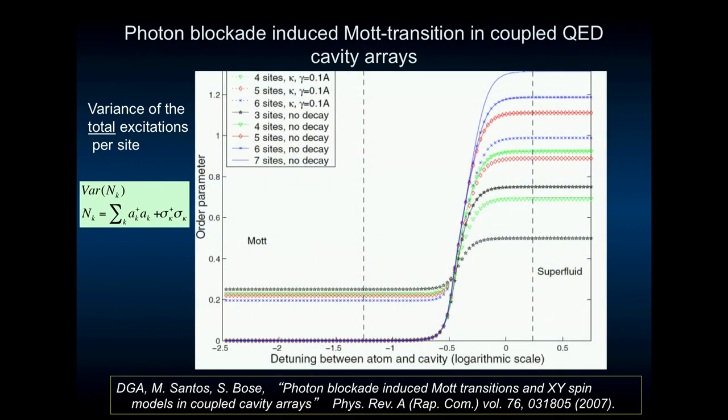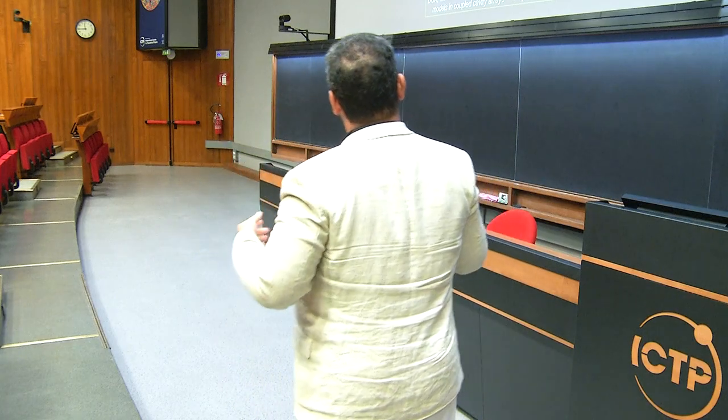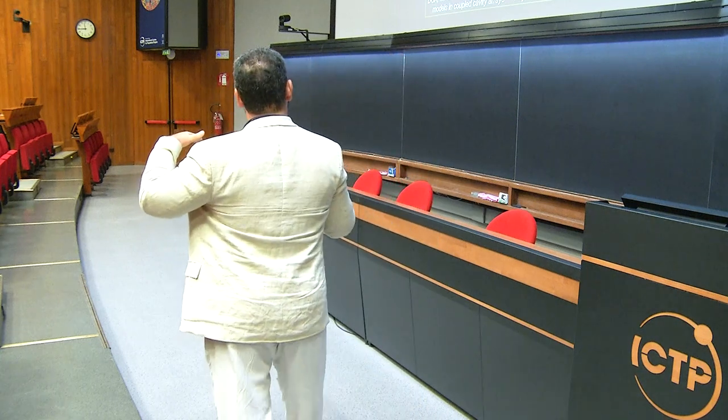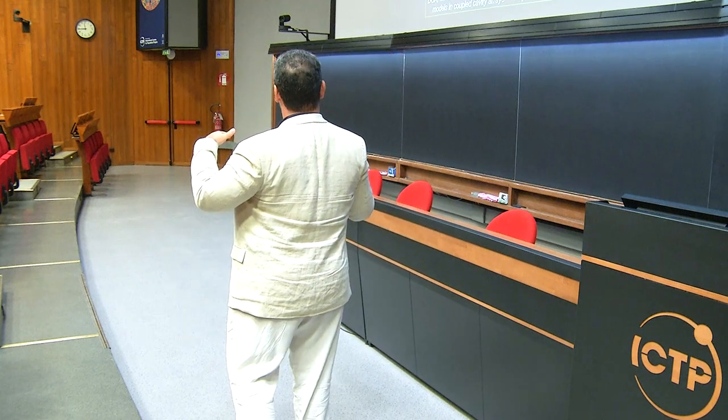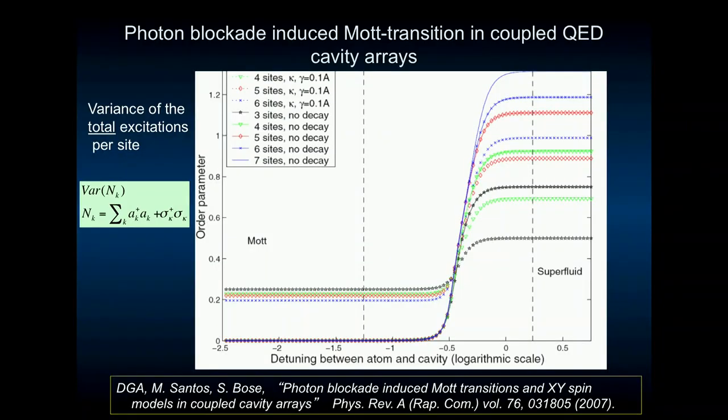At the photon blockade regime, if you look at the ground state, you have some sort of Mott-like state, as you would expect, because photons are repelling each other. So if the repulsion is larger than the corresponding hopping, and you look at the fluctuations of what is this, this is the total number of excitations, atoms and photons per site, as a function of the detuning, you go via what's called something that looks like a phase transition. And like a quantum phase transition.